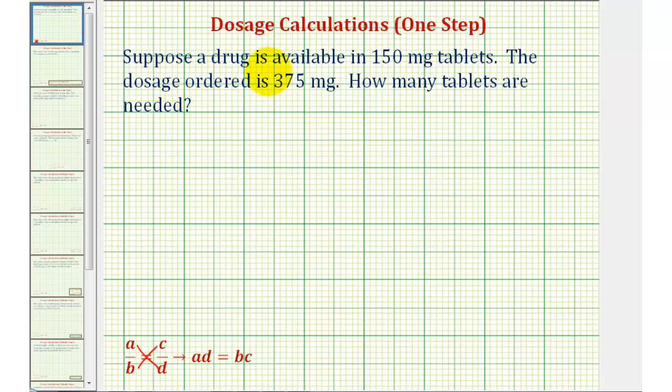Looking at our example, it says suppose a drug is available in 150 milligram tablets. The dosage ordered is 375 milligrams. How many tablets are needed?